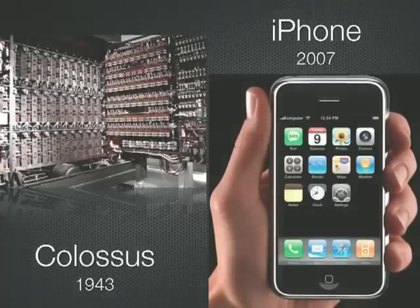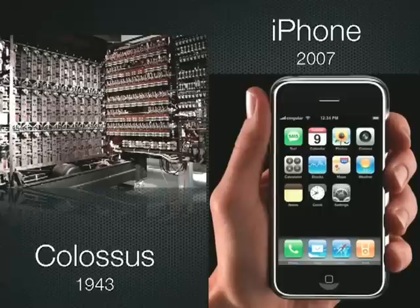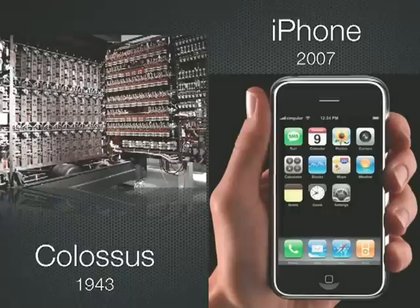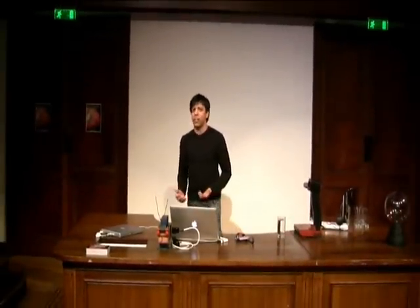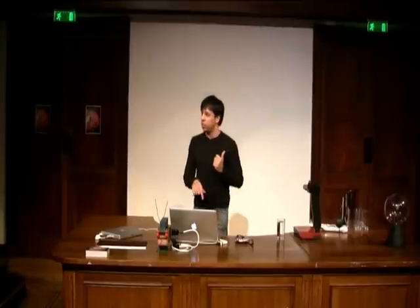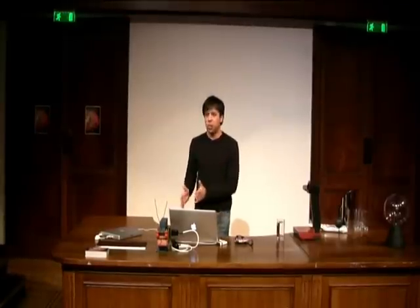Just putting things in perspective — that's Colossus, 1943. The other device you see is a 2007 iPhone. Which do you think is more powerful? The iPhone is 250 times more powerful than Colossus. And that's the first iPhone from 2007 — I'm not even talking about the devices we have today, just a few years on.